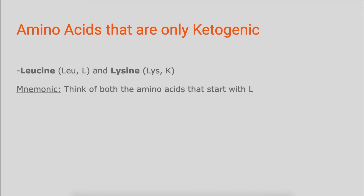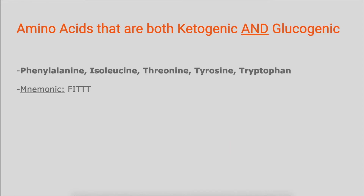The ketogenic amino acids are leucine and lysine. An easy way to remember this is that both ketogenic amino acids start with the letter L. It's important to note that the ketogenic amino acids are broken down into acetyl-CoA.